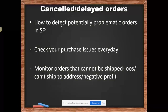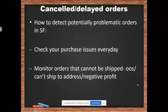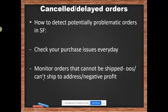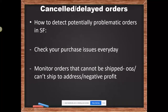So we said we have to detect Purchase Issues in SaleFreaks and in eBay. Let's talk about the SaleFreaks part first. How do you detect potentially problematic orders in SaleFreaks? You have to check your Purchase Issues every single day, and you have to monitor orders that cannot be shipped. What are the reasons orders aren't getting fulfilled automatically? Maybe the item is out of stock on Amazon, so SaleFreaks couldn't place the order.